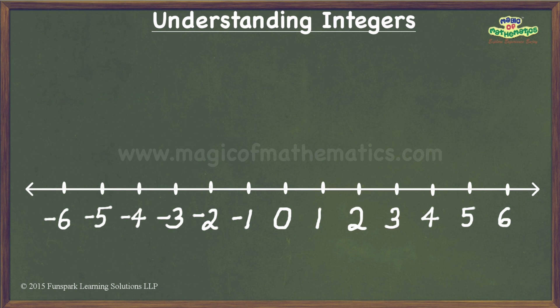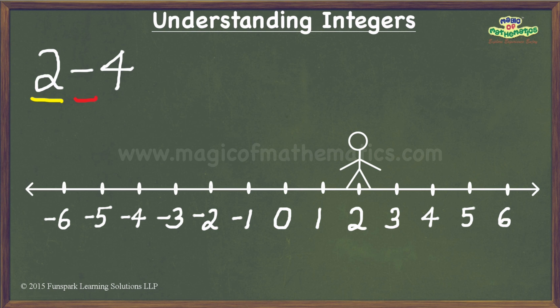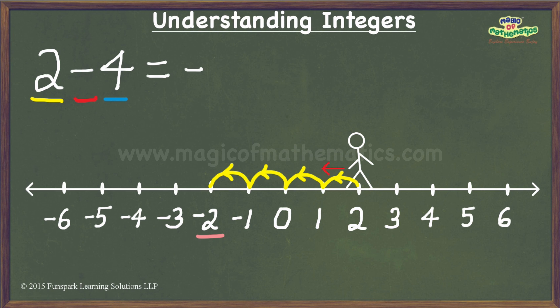The last example is 2 minus 4. In this example, the first operand is 2 and hence I begin my journey from 2. Since the operator here is the subtraction operator, I turn to walk towards the left. The second operand is 4, which means I walk four steps forward, thereby ending up at negative 2. And hence, the given expression evaluates to negative 2.